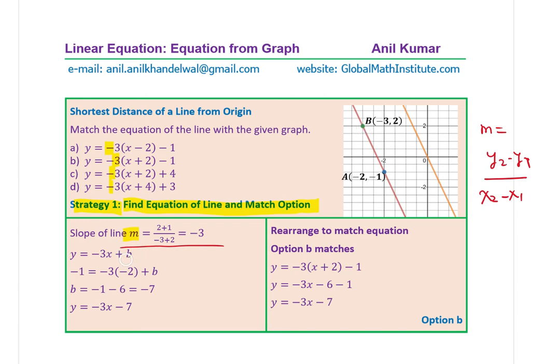To find the equation of the line, we'll now substitute one of these points in the equation y = -3x + b. I chose to use point A, which is (-2, -1). -2 being the x value, -1 being the y value. So we get b as -1, and this is plus 6.